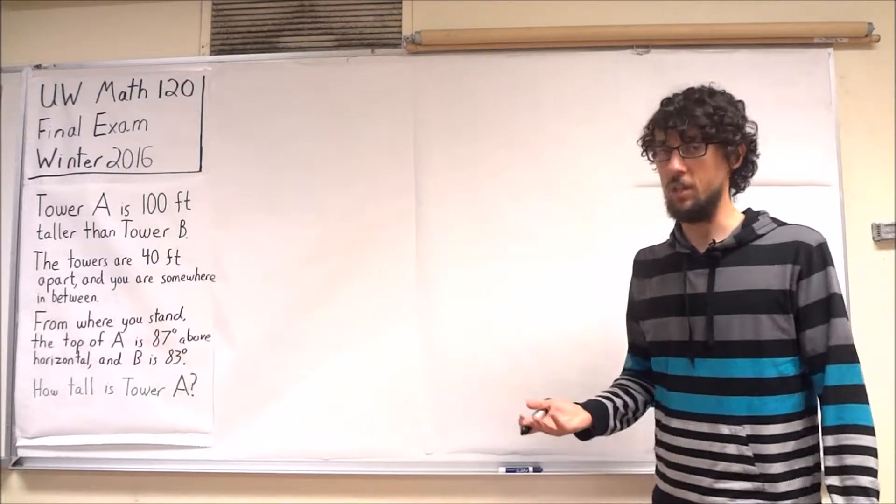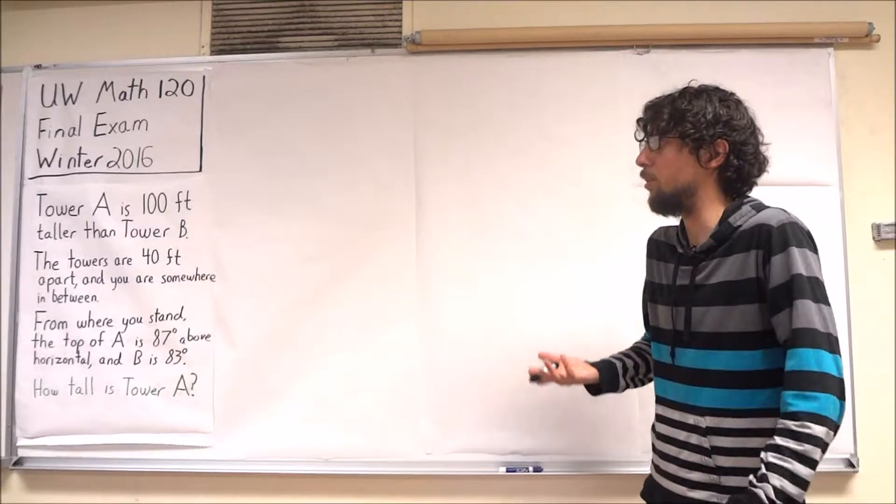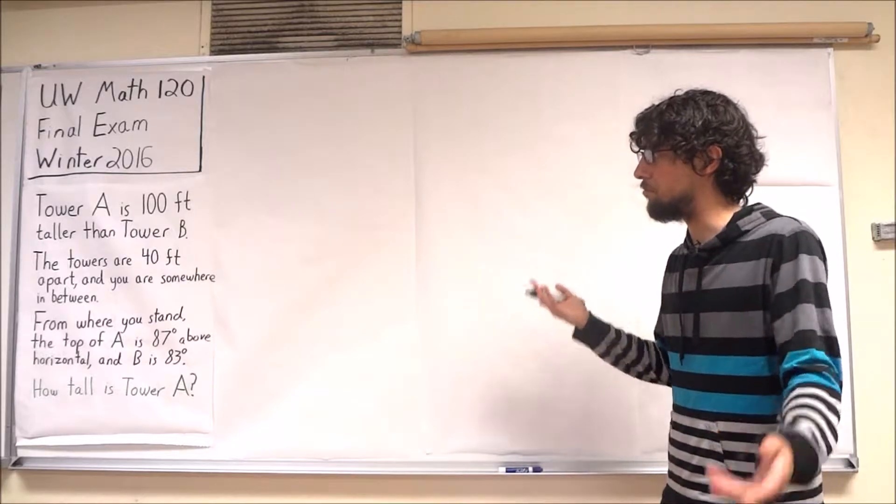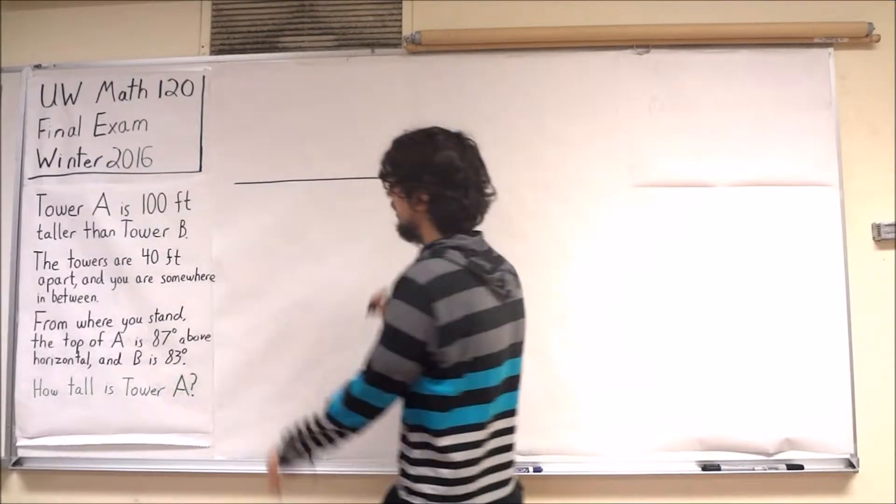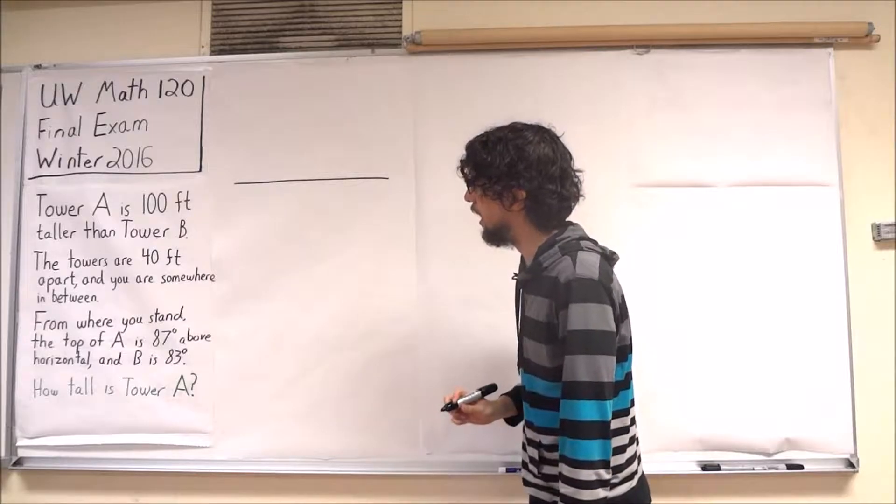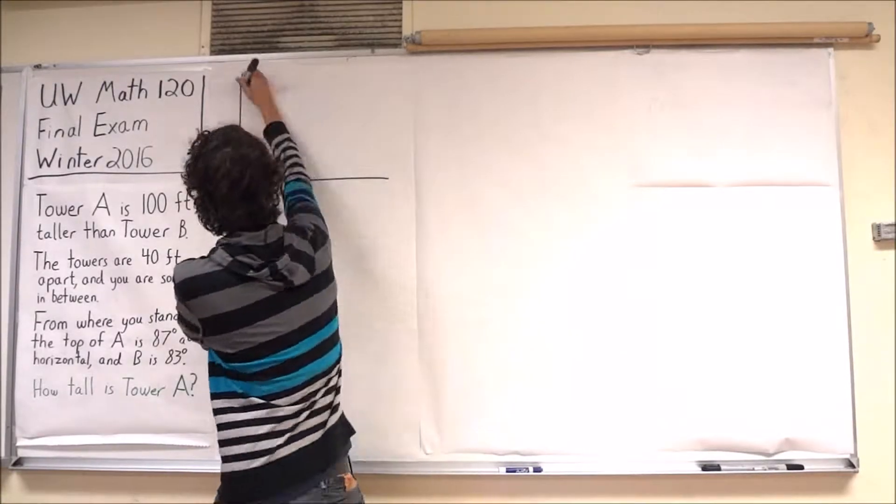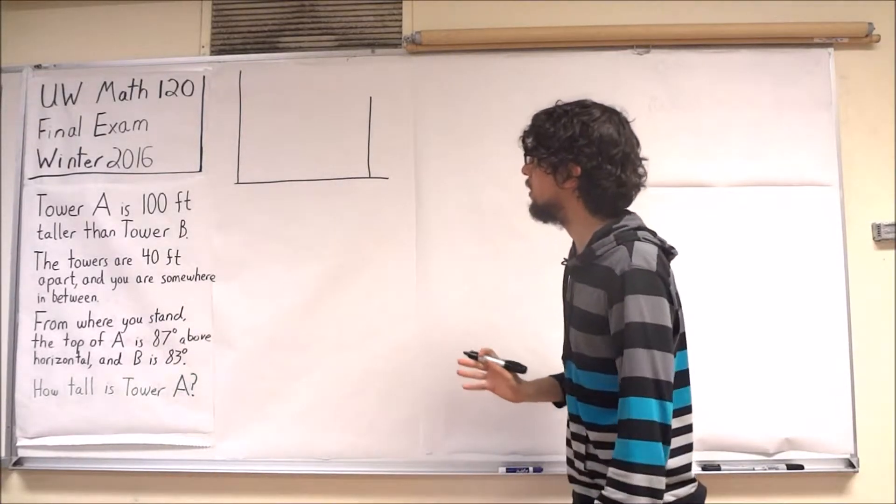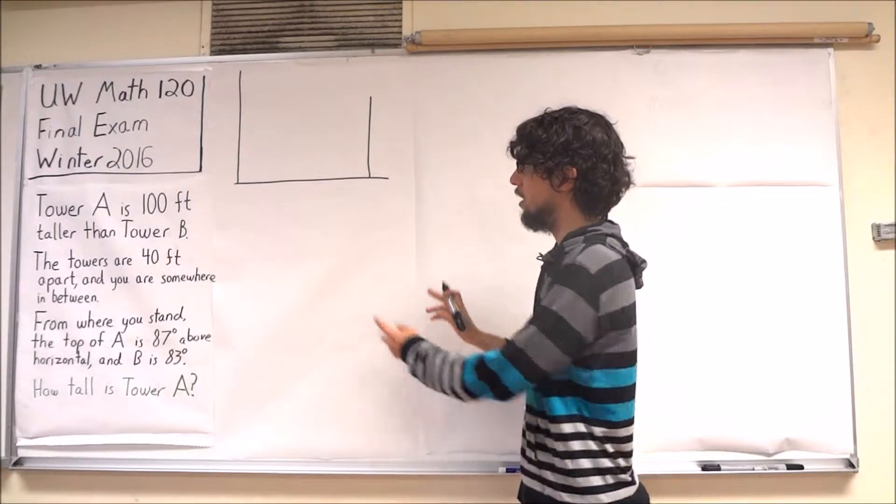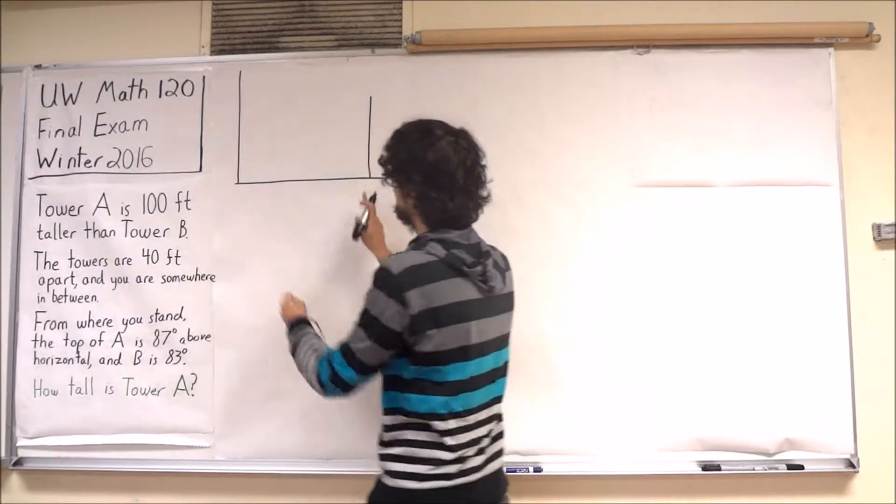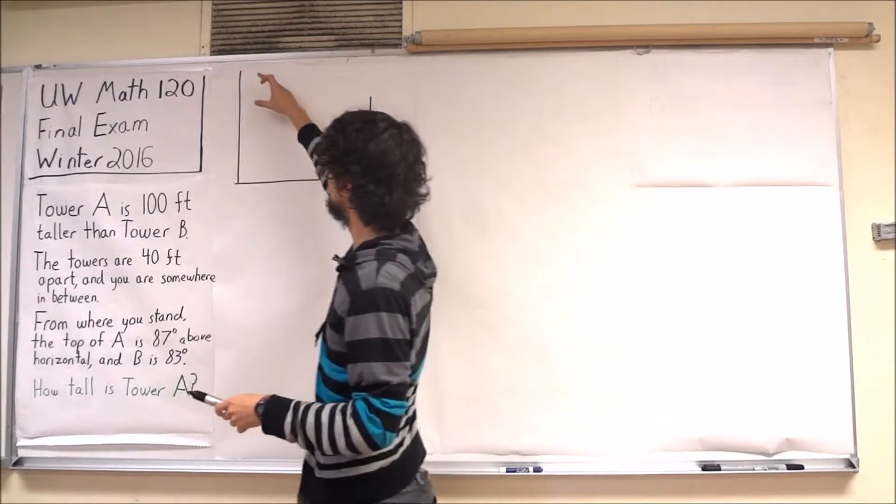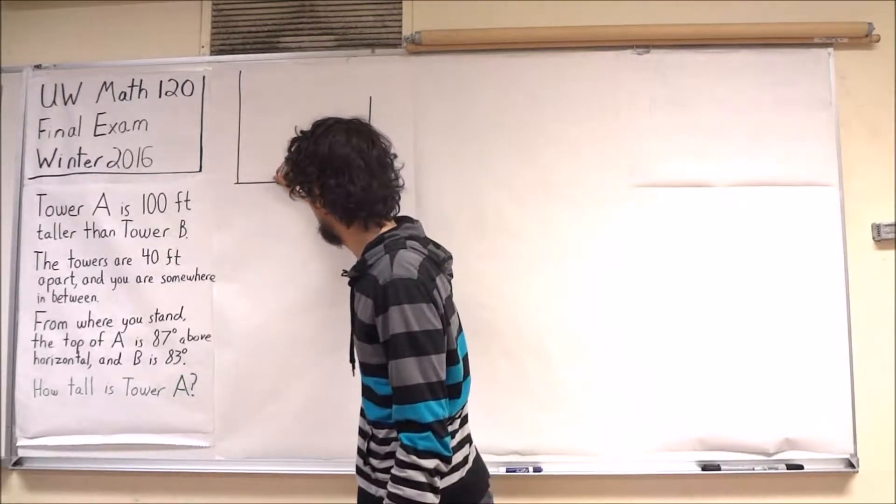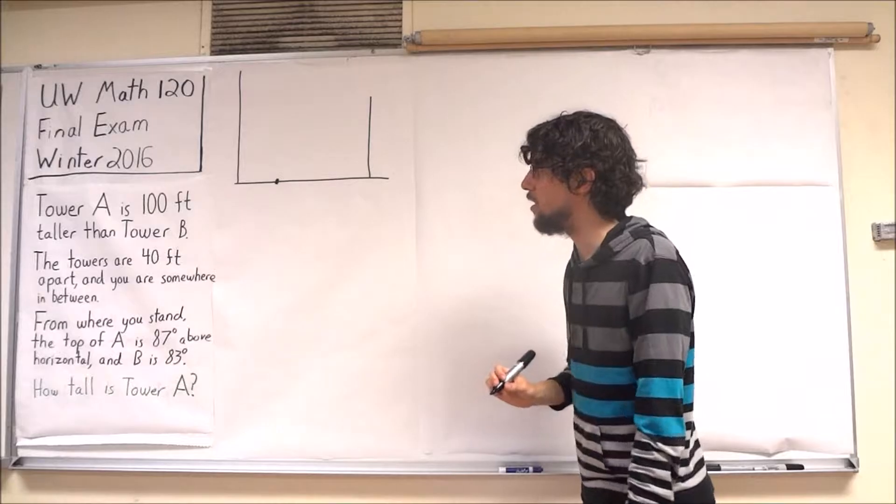I always start questions like this by drawing a picture. And I'm not super concerned about whether my picture is perfectly to scale, but I'd like to get the details somewhat reasonable. Let's say here's the ground, and we have Tower A and Tower B. I know that Tower A is taller than Tower B. And I'm not going to be drawing this relatively to scale. In particular, the distance between the two towers is 40 feet. The difference in heights is 100 feet, but clearly my picture is already out of scale.